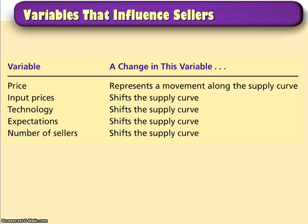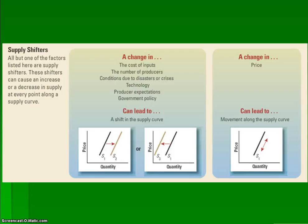In conclusion, remember: if there's a change in price, there's not going to be a shift — it's just going to be a movement along the curve. But any of those other categories from EEAT will cause the curve to shift. A shifting curve is a change in supply; a movement along the curve is a change in quantity supplied, which is the result of a change in price.